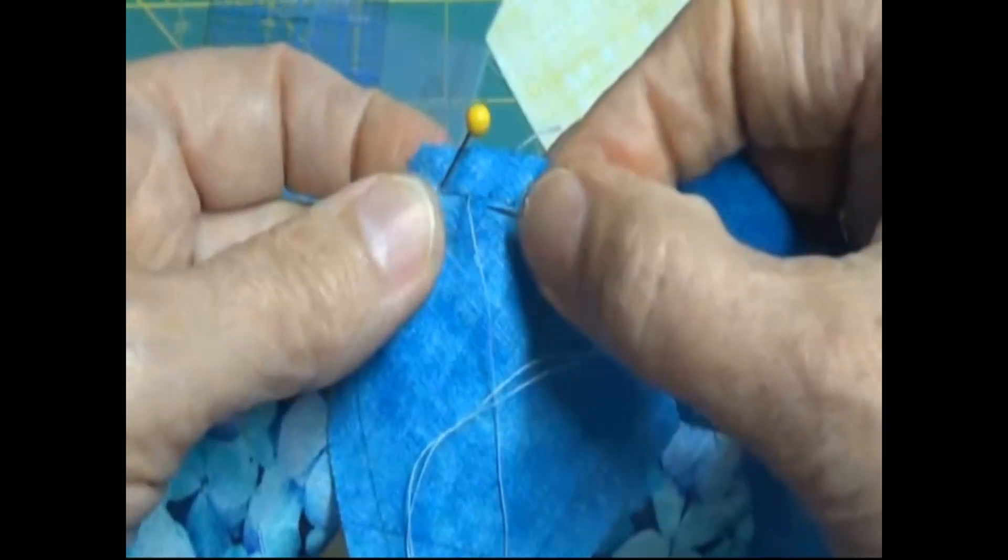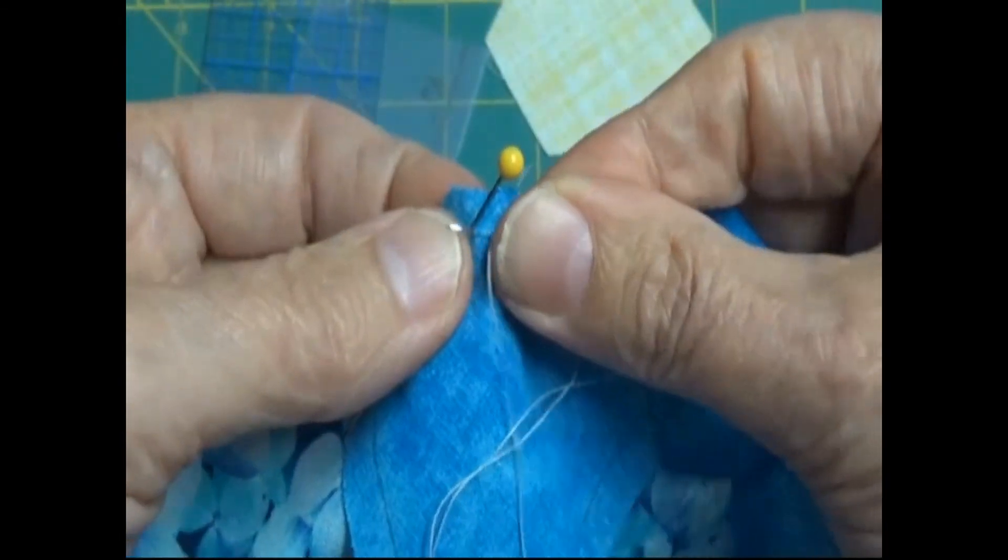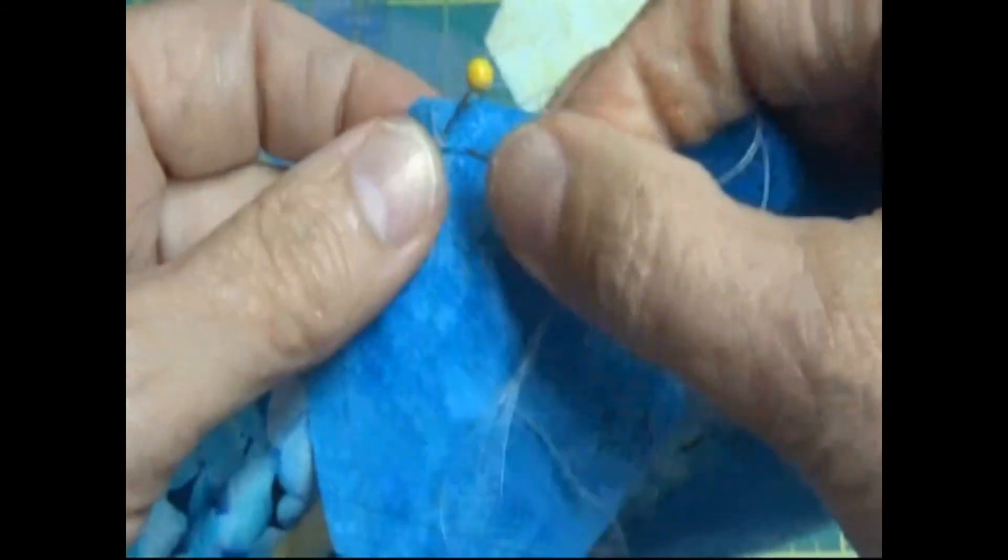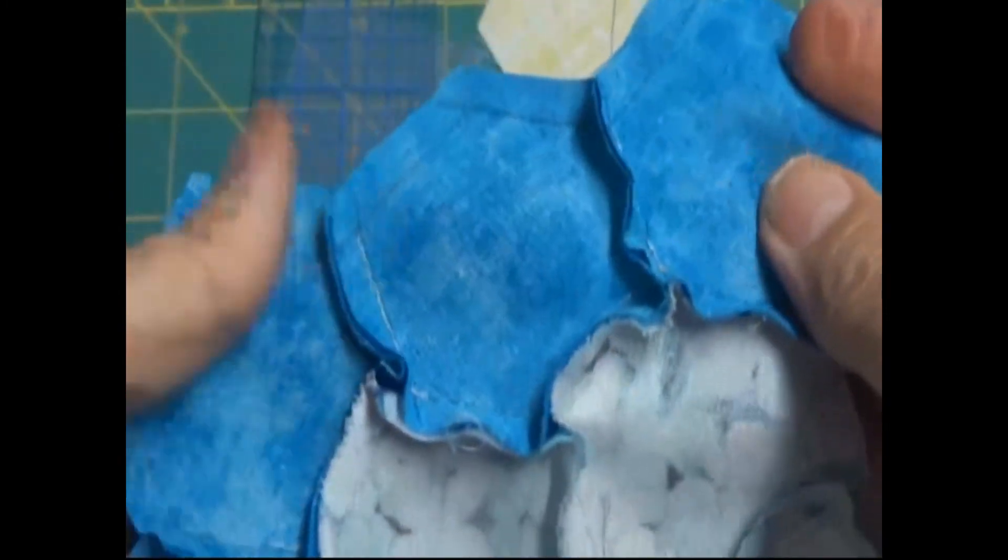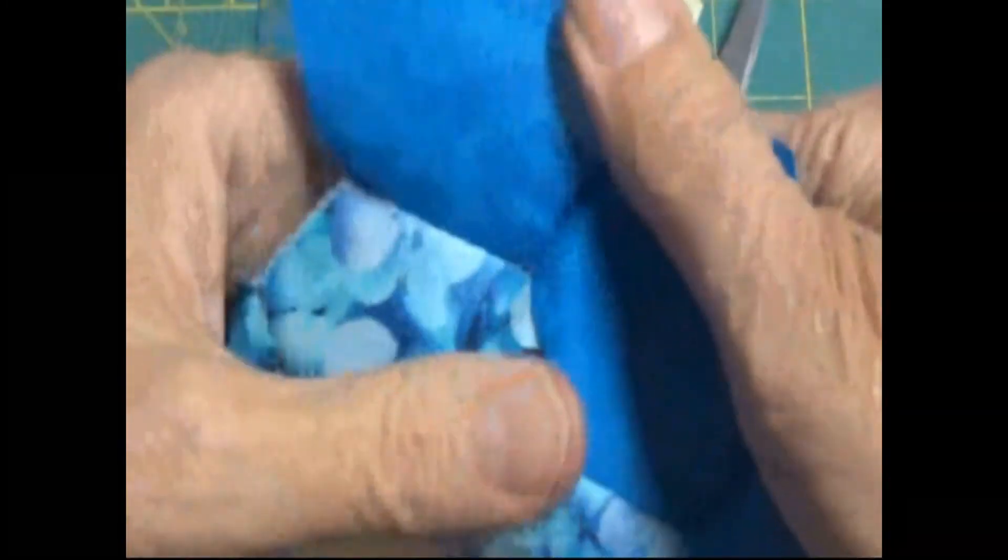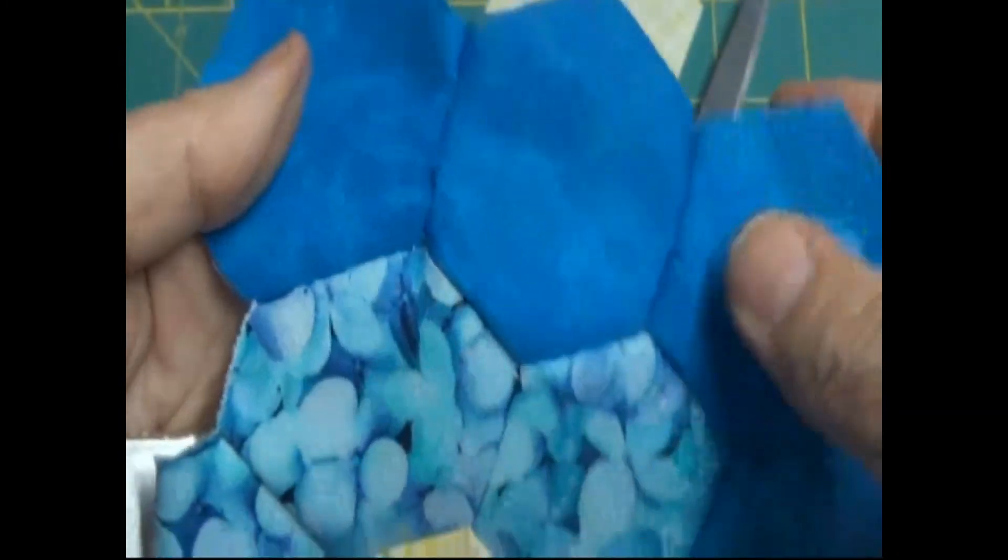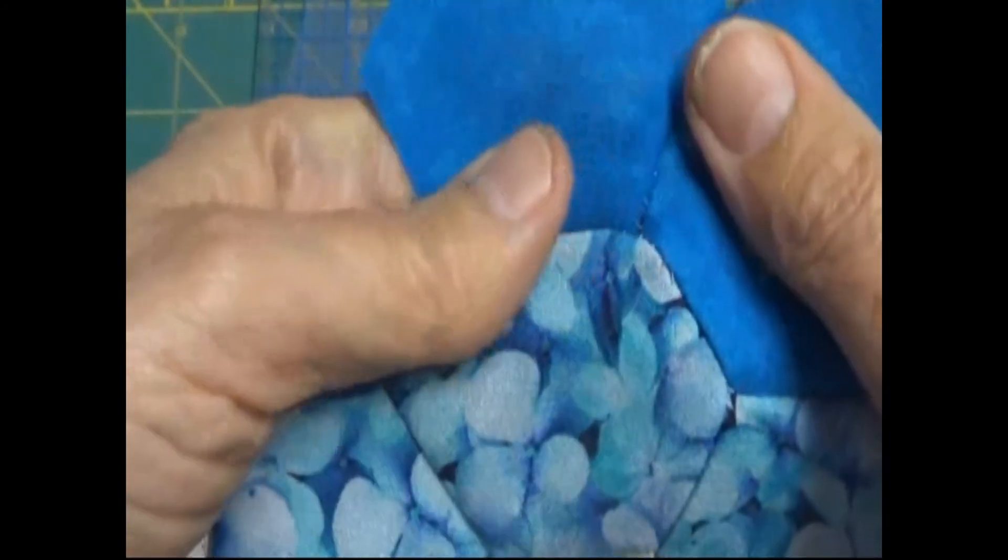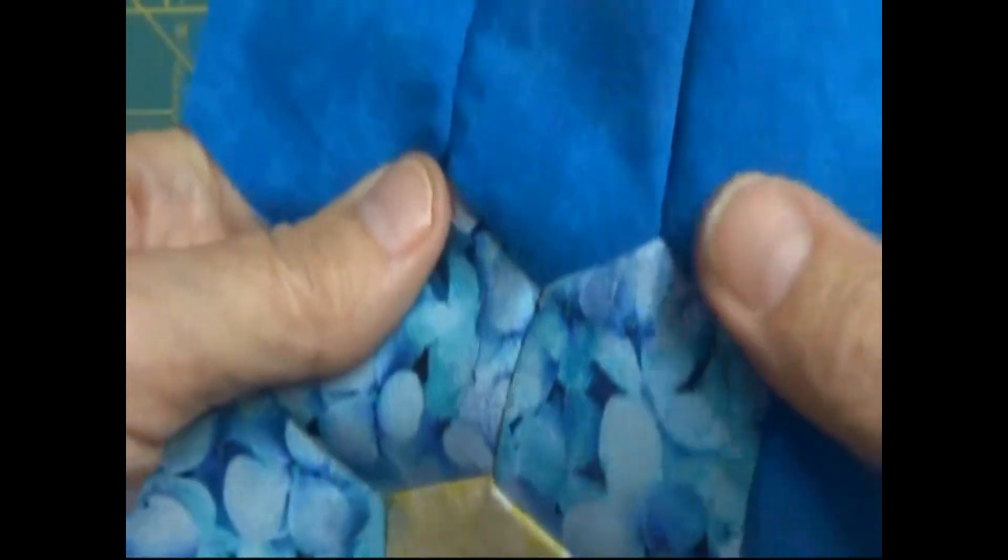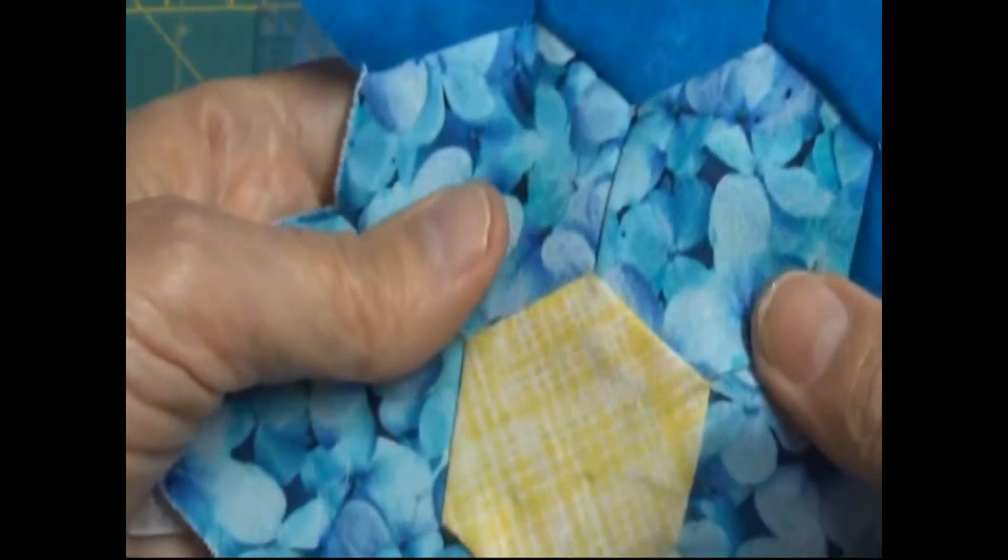I would mark the whole flower, one flower, and then sew it together. And then take out my marker and mark the next flower. I just finished sewing that. Turn it over. See? The corners are sewn right into the corner. The corners are sewn right into the corners.